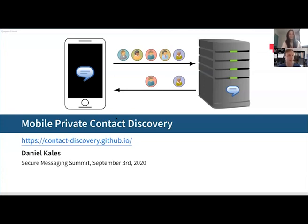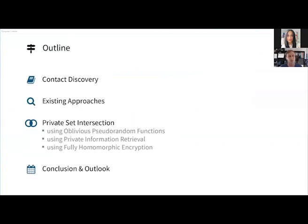Welcome to my talk about mobile private contact discovery. In this talk I'm going to cover what the contact discovery process is and some of the existing approaches that current messaging applications are using, then talk about a cryptographic solution to this contact discovery process in the form of private set intersection.